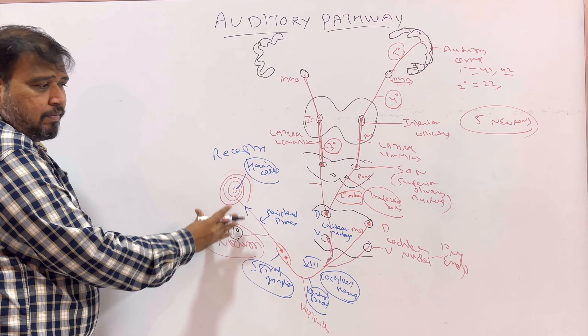M for medial geniculate body. A for auditory cortex. So five order neurons. Even if you just remember this mnemonic E. coli MA, you can easily write the auditory pathway. It can come in essay as well as five-mark questions. In fact, in special senses, this auditory pathway is highly expected in university examinations.